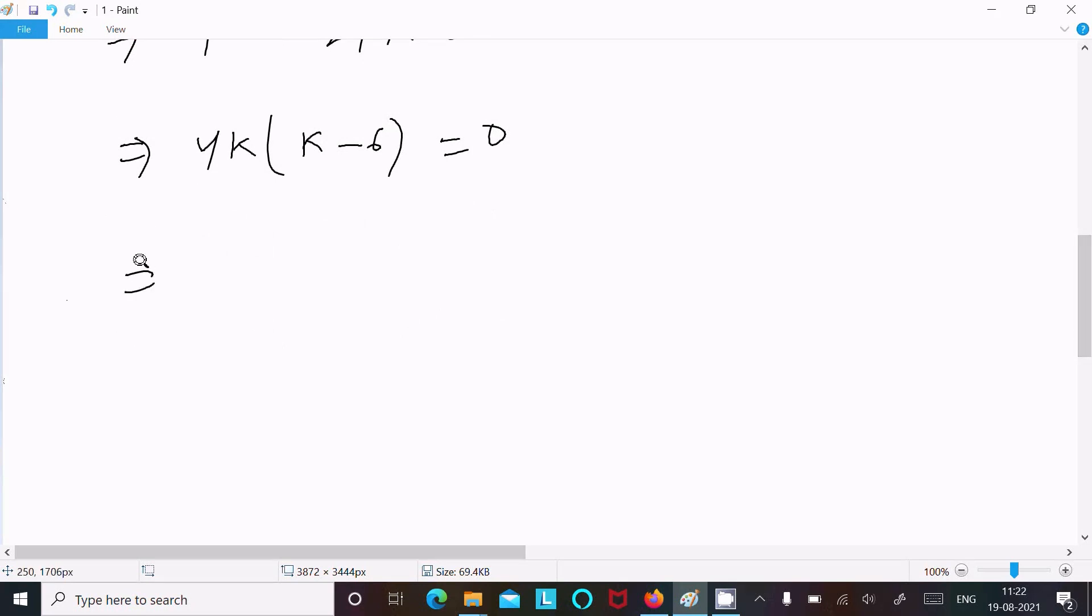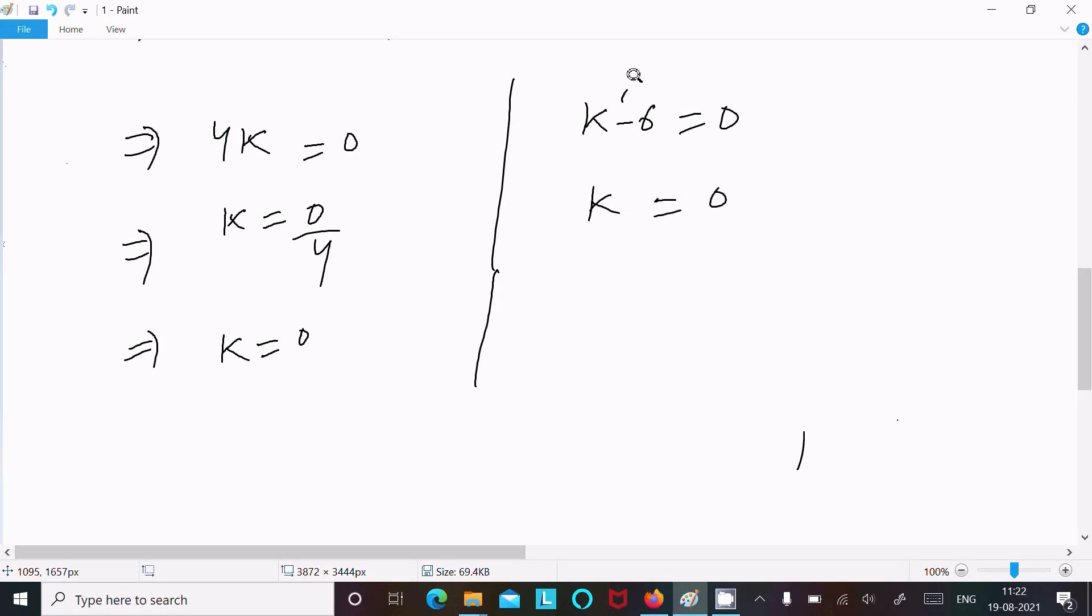This gives us 4k = 0 or k - 6 = 0, so k = 0 or k = 6.